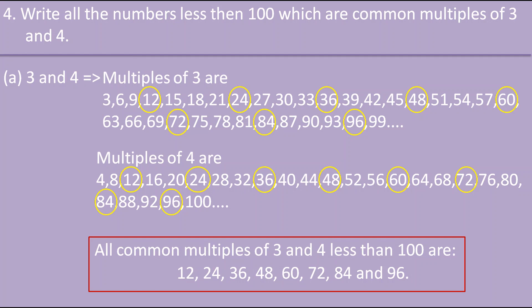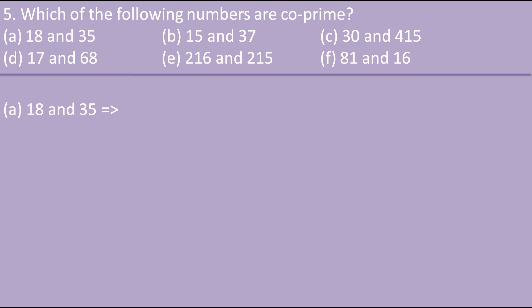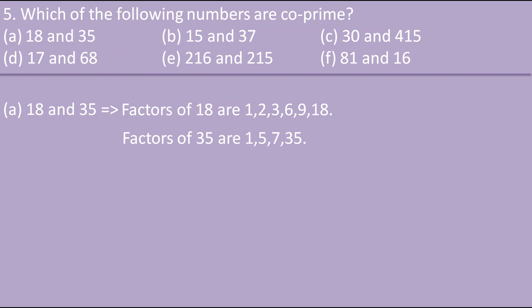The fifth question asks which of the following numbers are co-prime. Co-prime numbers are two numbers which have only 1 as their common factor. For 18 and 35: factors of 18 are 1, 2, 3, 6, 9, 18 and factors of 35 are 1, 5, 7, 35. Only 1 is common, so 18 and 35 are co-prime numbers.